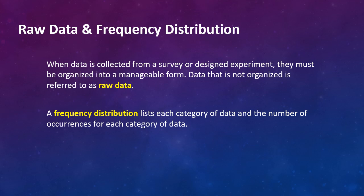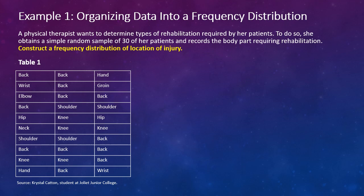Raw data and frequency distribution. When data is collected from a survey or designed experiments, it must be organized into a manageable form. Data that is not organized is referred to as raw data. A frequency distribution lists each category of data and the number of occurrences for each category of data. Let's look at an example that will make this a little more clear.